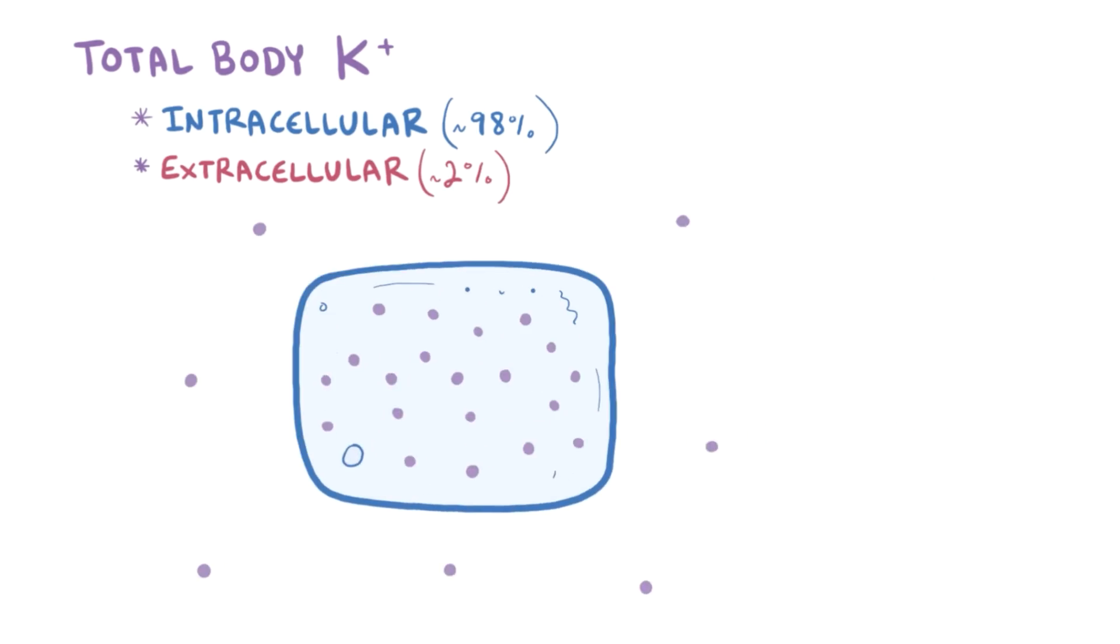In fact, the concentration of potassium inside the cells is about 150 milliequivalents per liter, whereas outside the cell it's only about 4.5 milliequivalents per liter. Keep in mind that these potassium ions carry a charge, so the difference in concentration also leads to a difference in charge, which establishes an overall electrochemical gradient across the cell membrane.